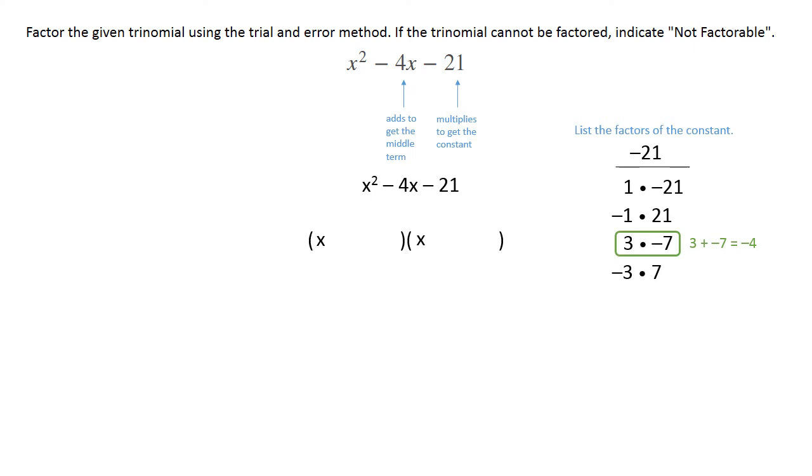So that would multiply together to give you the x squared. And then you're gonna use the 3 and the negative 7 that you identified in the rest of the factors. So you've got x plus 3 and x minus 7, and that is your final answer for this one.